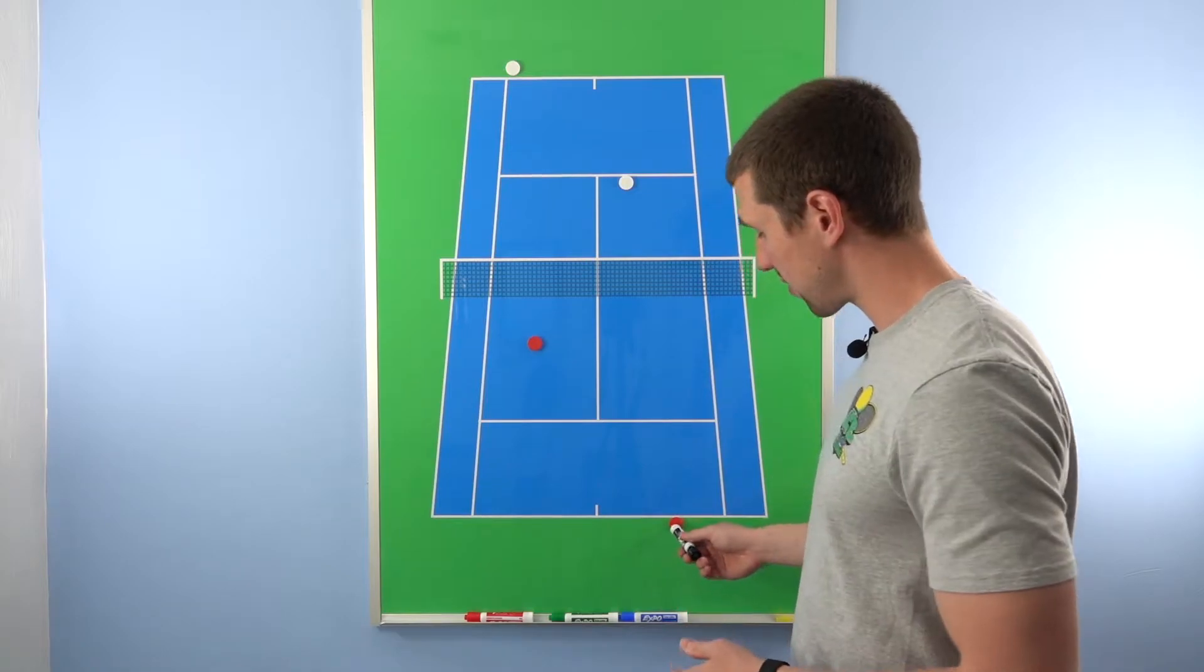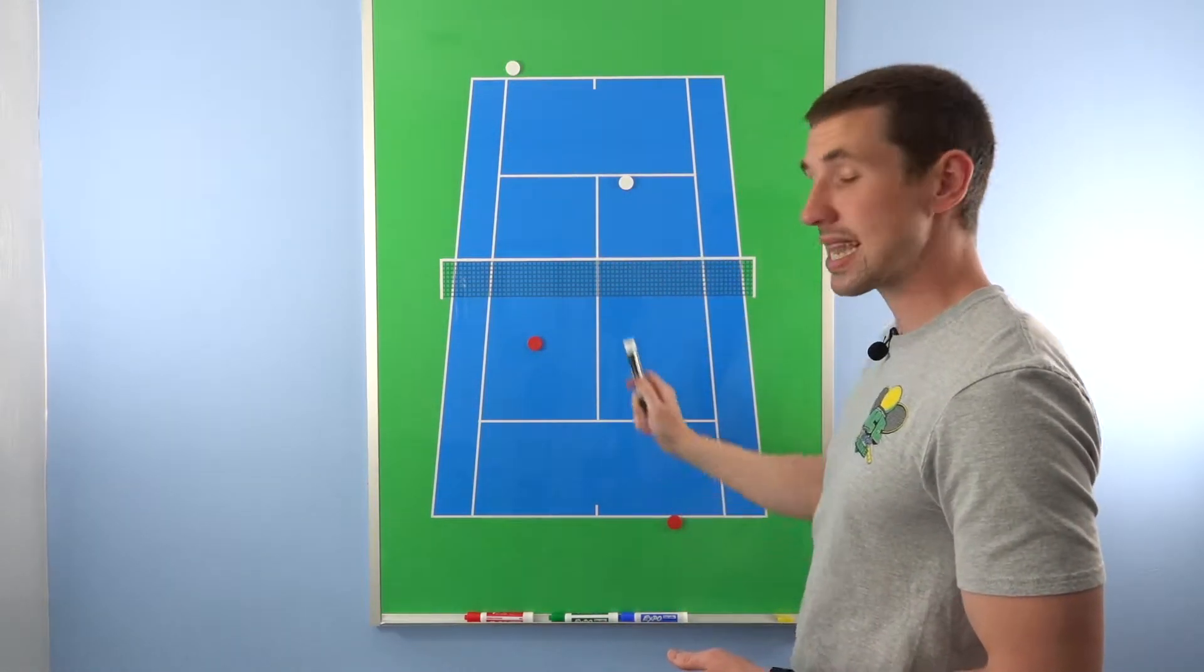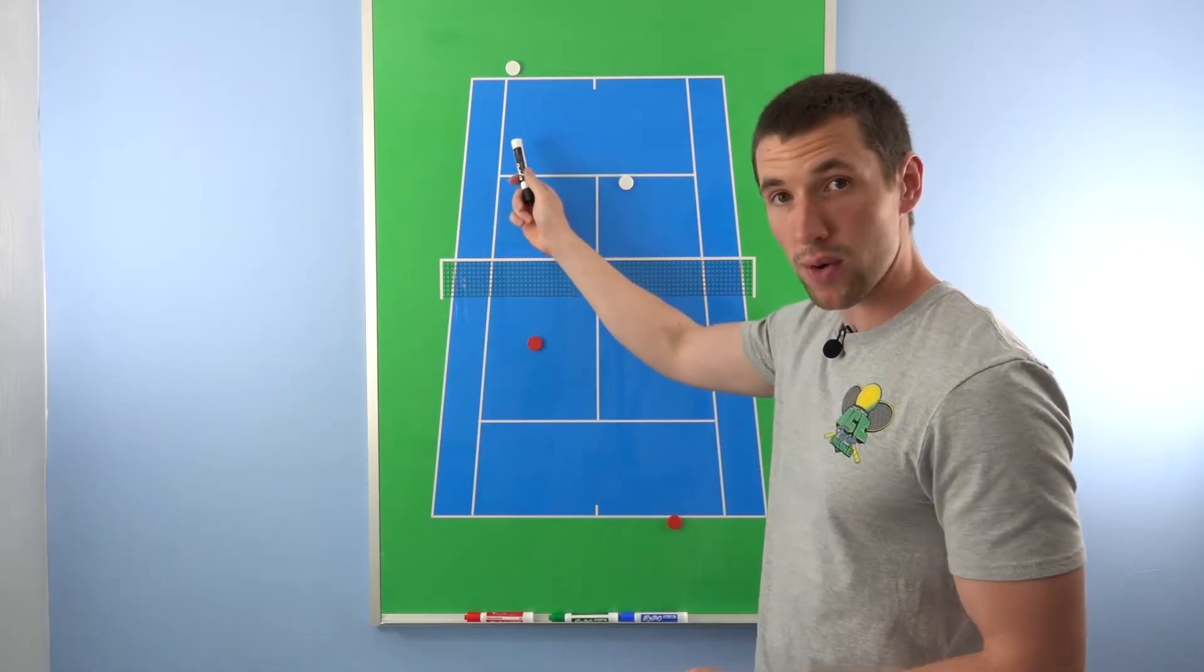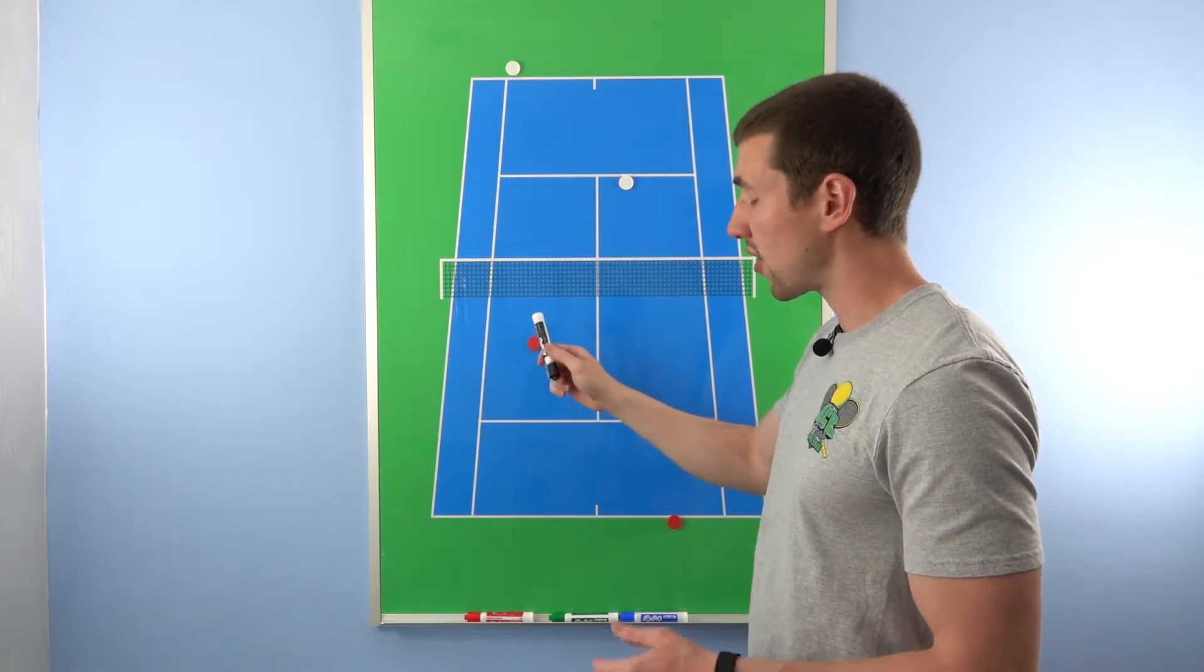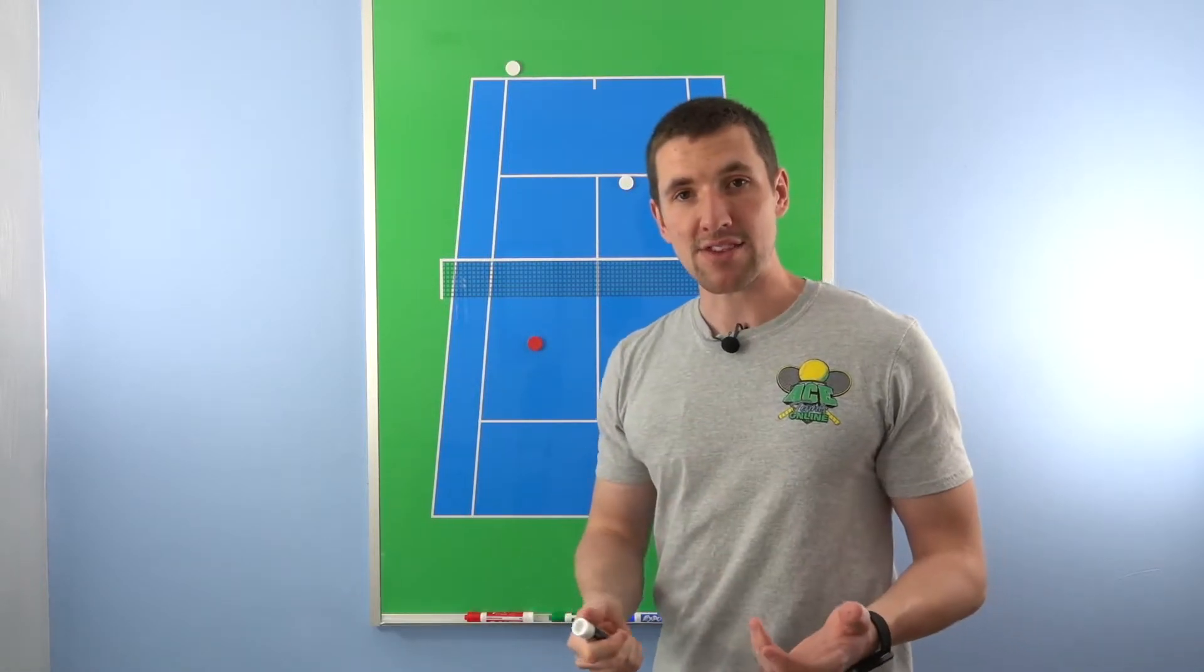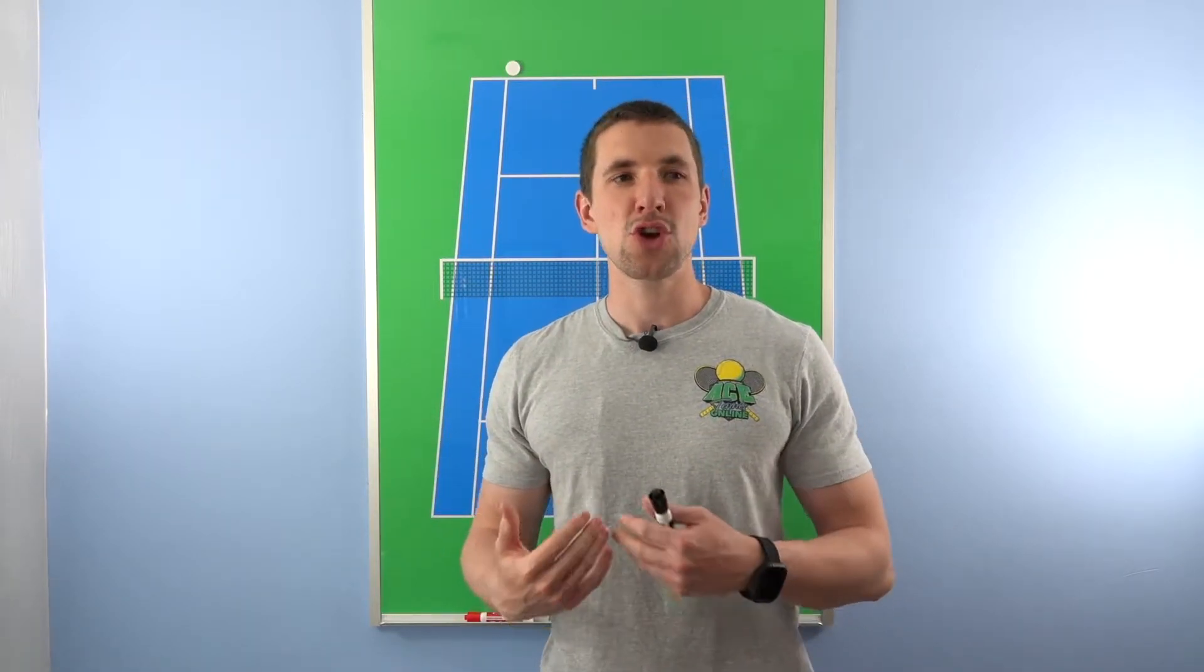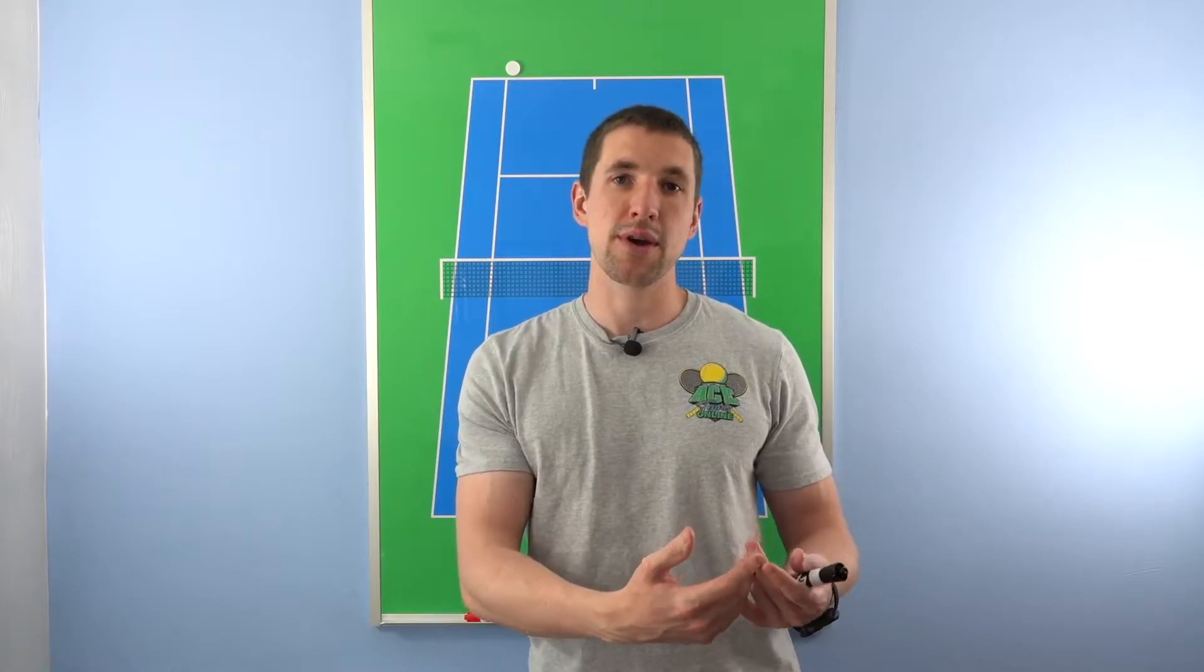So our responsibility as the baseliner is to try and keep that ball in play and keep that point going. As the net player, our goal is to finish the point. So, if we get a chance to finish it, that's your duty. Now, it doesn't mean that you can't finish the point at the baseline, but just a simple way of thinking about it is you want to prolong the point.